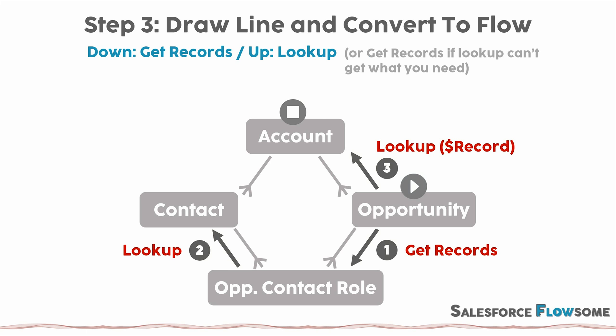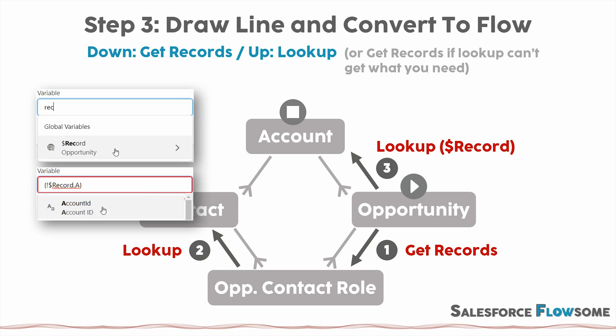This is the most important sub-step of all. Of course there are some exceptions. When you are going upwards, you might sometimes still need to use get records. It all depends on whether the lookup can get the fields you need. For example, from the opportunity variable you can only get the account ID. But if you need other account fields like account name or annual revenue, since you couldn't find them from the lookup, you will need to use get records. To summarize: going downwards, always use get records. Going upwards, always try to use lookup. If lookup can't get what you need, use get records instead.